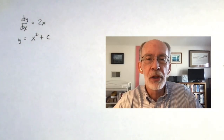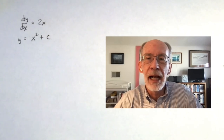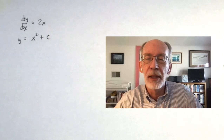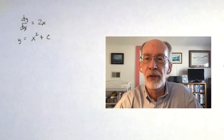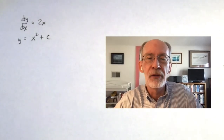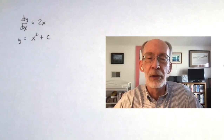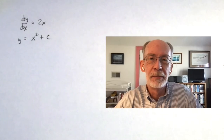We're going to switch over to Desmos and take a look at how that shakes out graphically when you take the function y equals x squared plus c and graph it for multiple different c values. Such a representation is called a set of integral curves, and we'll see in a second what they look like.